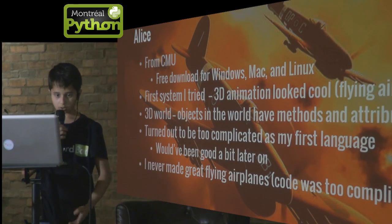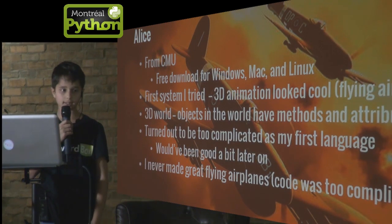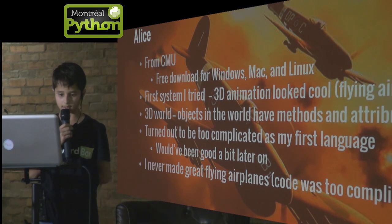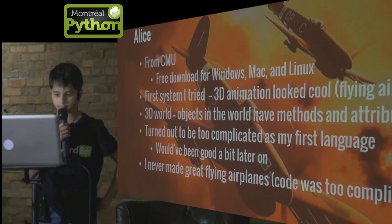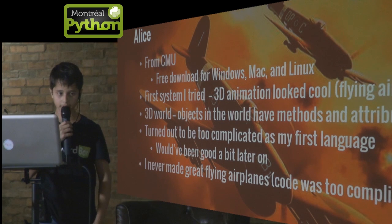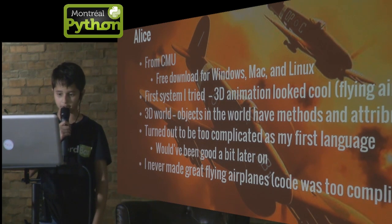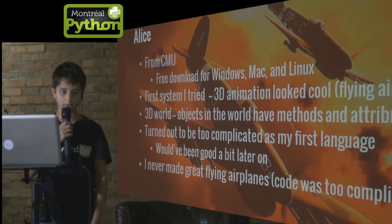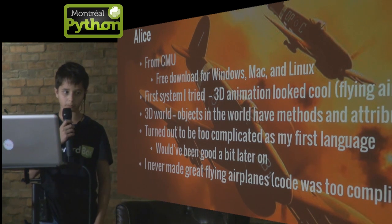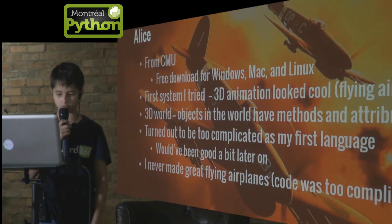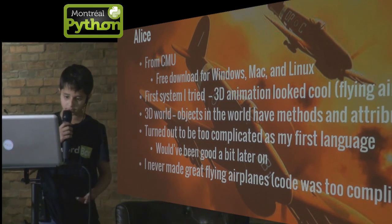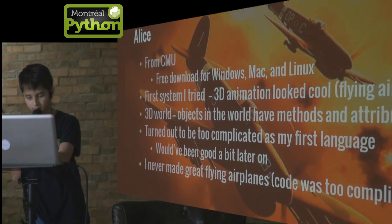The first thing I used is called Alice. It's from CMU. It's a free download for Windows, Mac, or Linux. I chose it because the 3D animation looked cool and objects in the world have methods and attributes, but partly because of that it turned out to be a bit too complicated as a first language and I couldn't really get very far with it. So I never made great flying airplanes because the code was too complicated.